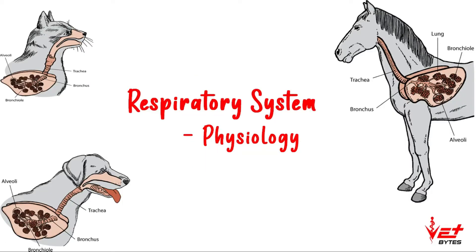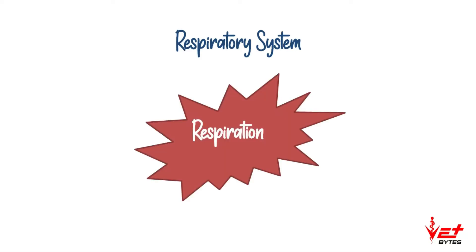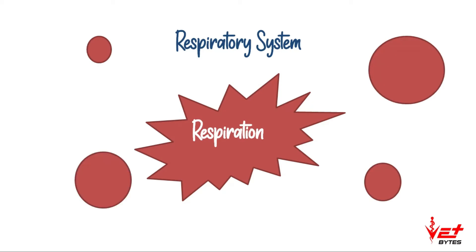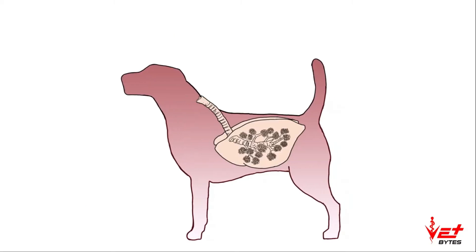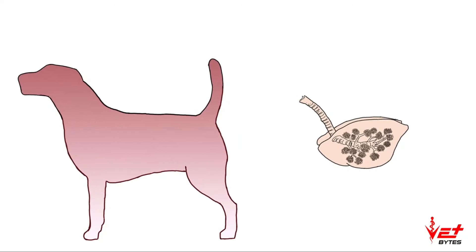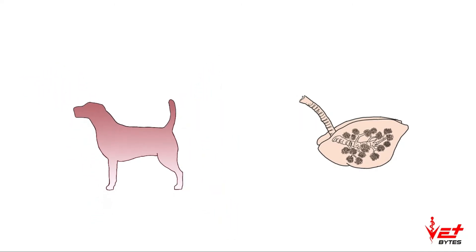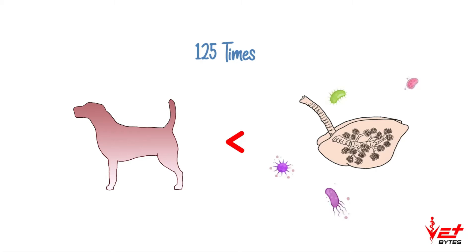Welcome back. The main function of the respiratory system is respiration, but there are other important functions as well. We'll discuss respiratory clearance and panting in this video. When we compare the surface area of the lungs with that of the body, the surface area of the inner aspect of the lung is 125 times larger than that of the body surface area, so it can act as a route of exposure for various foreign particles including infectious agents.